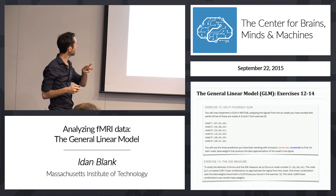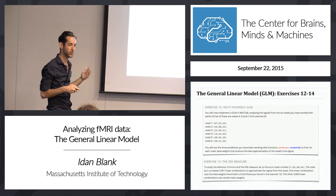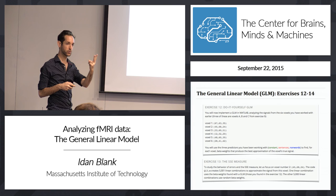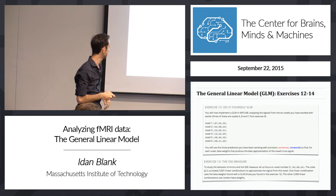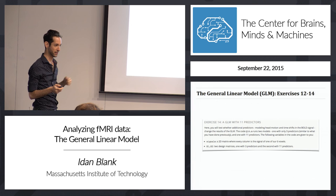Now you have three exercises. Exercise one: do the GLM yourself using the 'regress' command, which takes two arguments — the BOLD signal and the matrix of predictors. Exercise two: compute the SSE, the sum of squared errors. Exercise three: run a GLM with 11 predictors and see how it affects the results compared to only three predictors. These are exercises 12 to 14. After that, I have one more thing to show you, and then we're done.